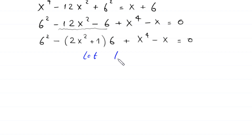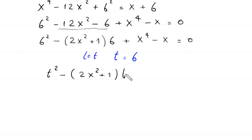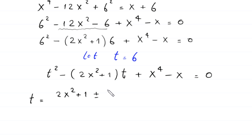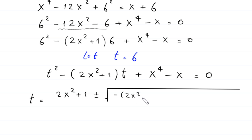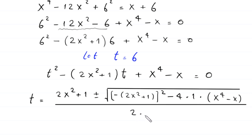Now we let t equal 6, so the equation becomes t squared minus 2 times x squared plus 1 times t, plus x to the power 4 minus x, equal to 0. This is a quadratic equation in terms of t. By the quadratic formula, t equals 2x squared plus 1, plus or minus the square root of negative 2 times x squared plus 1 whole squared, minus 4 times x to the power 4 minus x, all divided by 2.